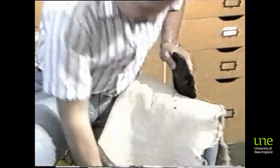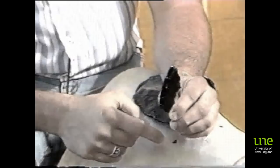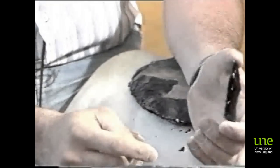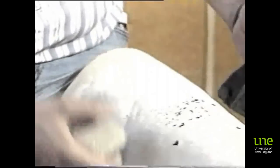Now see, technically, this flake is twice as long as it is wide, but it's not a blade because the scars on dorsal surface are in no way parallel to the long axis. They run all different ways. So this definition of flakes and blades are important.